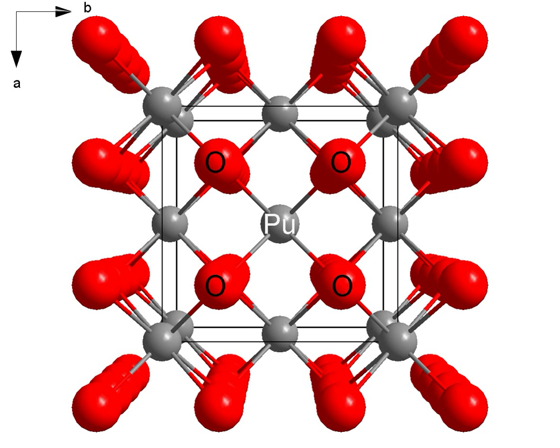The behavior of plutonium oxide in the body varies with the way in which it is taken. Since it is insoluble, when ingested, a very large percentage of it will be eliminated from the body quite rapidly in body wastes. In particulate form, plutonium oxide at a particle size less than 10 µm is toxic if inhaled, due to its alpha emission.